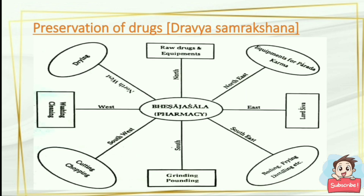There is a picture showing dravya samrakshana — preservation of drugs in specific directions within the bheshaja sala (pharmacy). Equipment should be kept in the northeast direction; in the east direction we place Lord Shiva; in the southeast direction we do boiling, frying, and distilling; in the south we do grinding and pounding; in the southwest we do cutting and chopping; in the west we do washing and cleaning; in the northwest we do drying; and in the north direction we place raw drugs and equipments.